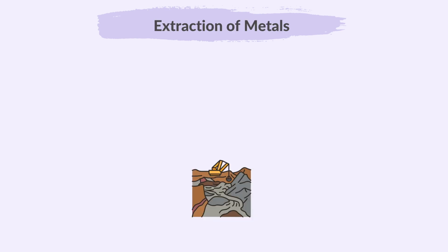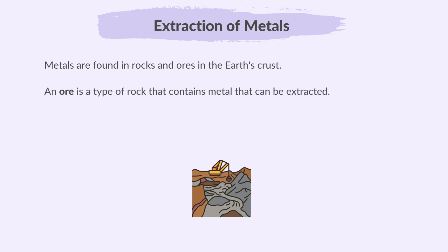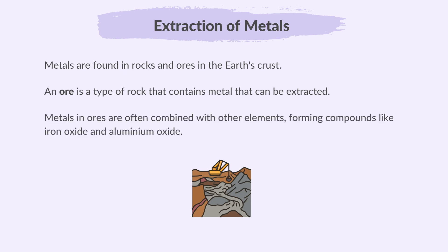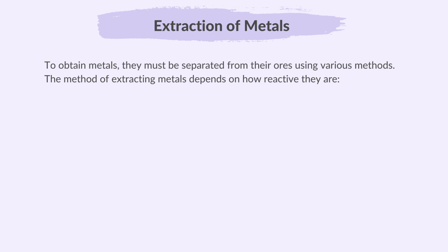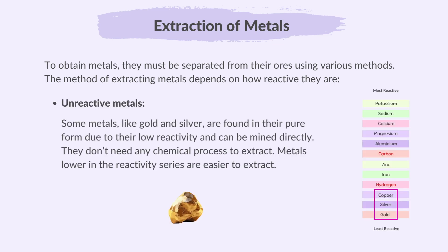Let's shift our focus to extraction of metals. Metals are found in rocks and ores in the earth's crust. An ore is a type of rock that contains metal that can be extracted. Metals in ores are often combined with other elements, forming compounds like iron oxide and aluminium oxide. To obtain metals, they must be separated from their ores using various methods. The method of extracting metals depends on how reactive they are. Some metals like gold and silver are found in their pure form due to their low reactivity and can be mined directly — they don't need any chemical process to extract. Metals lower in the reactivity series are easier to extract.